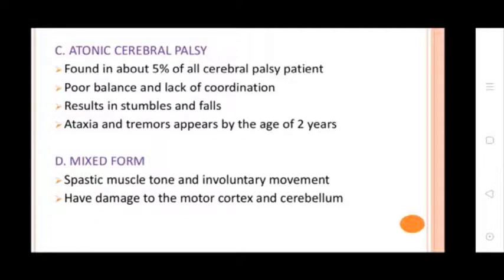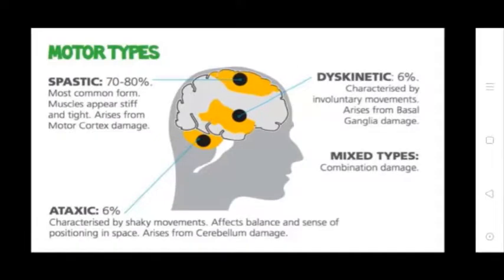Type 4: Mixed Form — involves spastic muscles, involuntary movement involvement, and damage over both the motor cortex and cerebellum. Motor types are classified as: Spastic, Dyskinetic, Ataxic, and Mixed types.